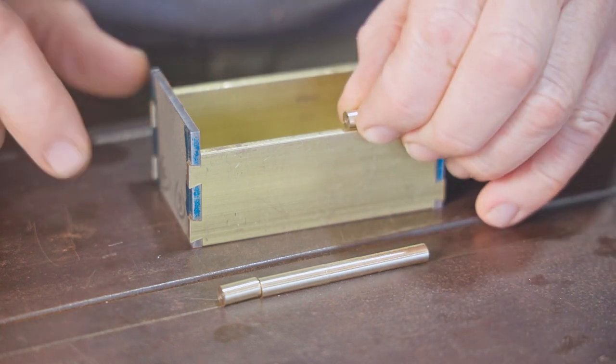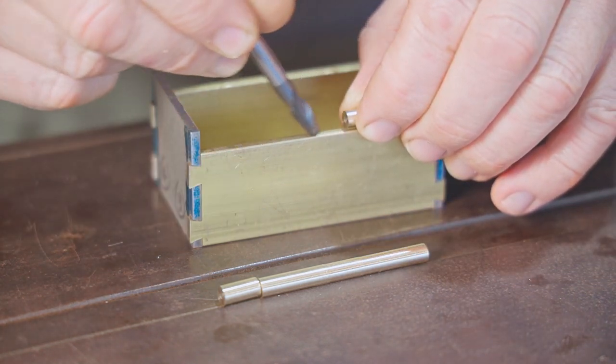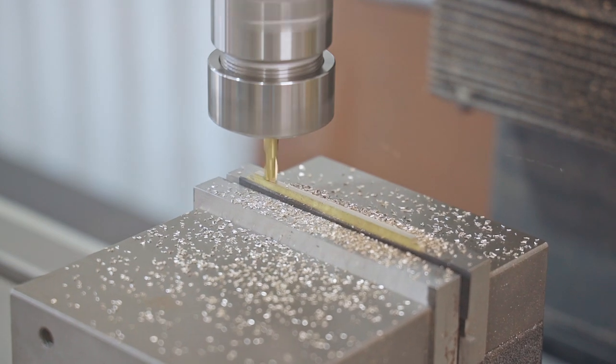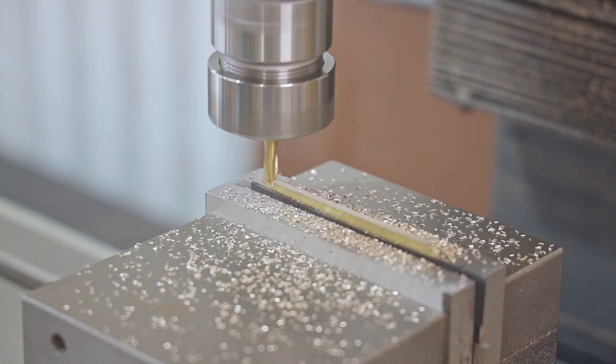Now I'll mill the top of the back piece for the barrel pieces to fit into. First I need to mill the back piece down a touch to compensate for the extra height that the hinge will add.